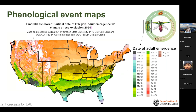Here is a phenological event map for emerald ash borer for 2024, using climate data for the current year and forecasting through December 31st using NMME climate forecasts. Dark gray areas are predicted to be climatically unsuitable due to severe heat stress. White areas are too cold for adult emergence to be predicted. Across Oregon and most of the West, adult emergence is predicted sometime in June or July, with some of the coldest areas as late as August.